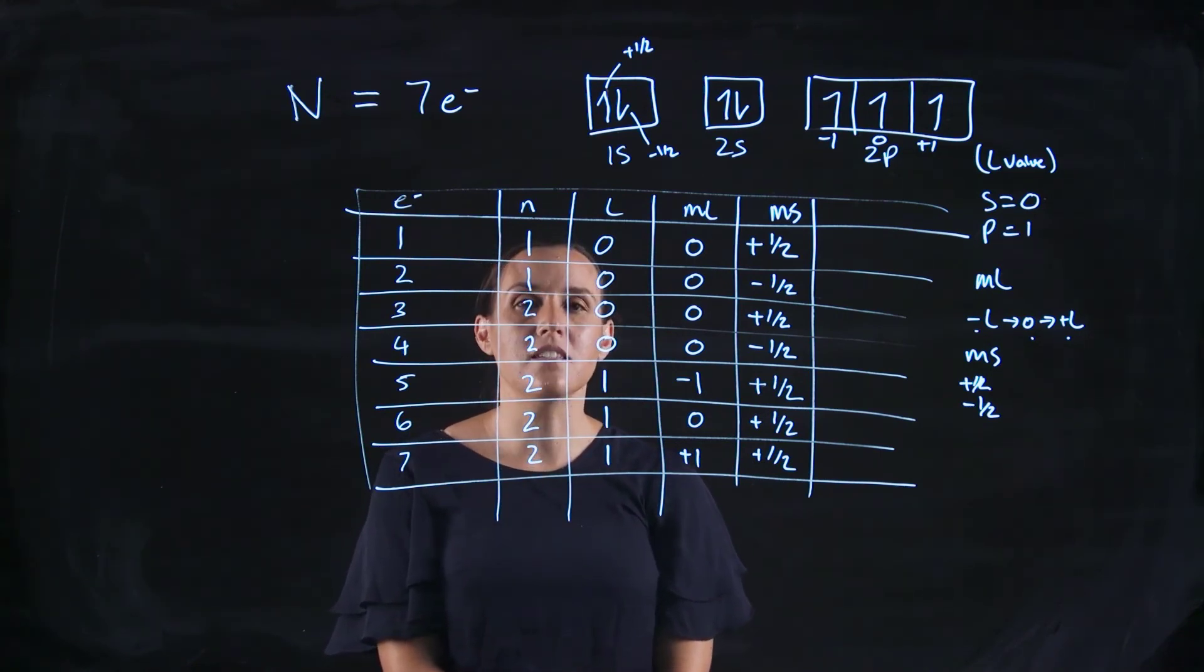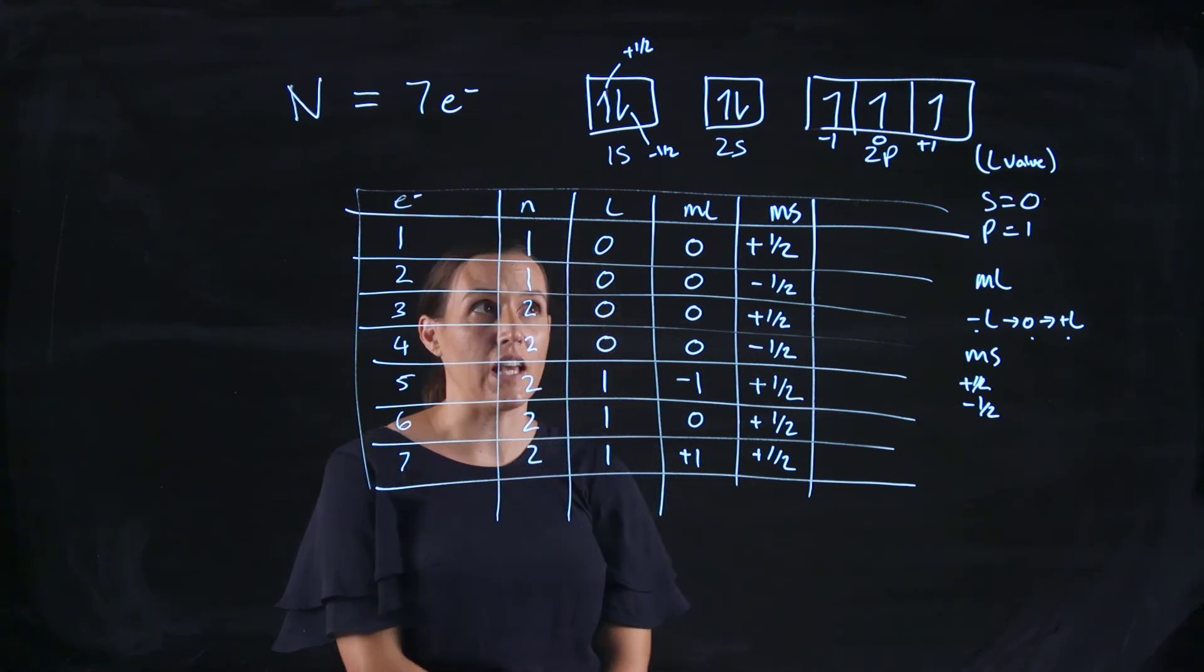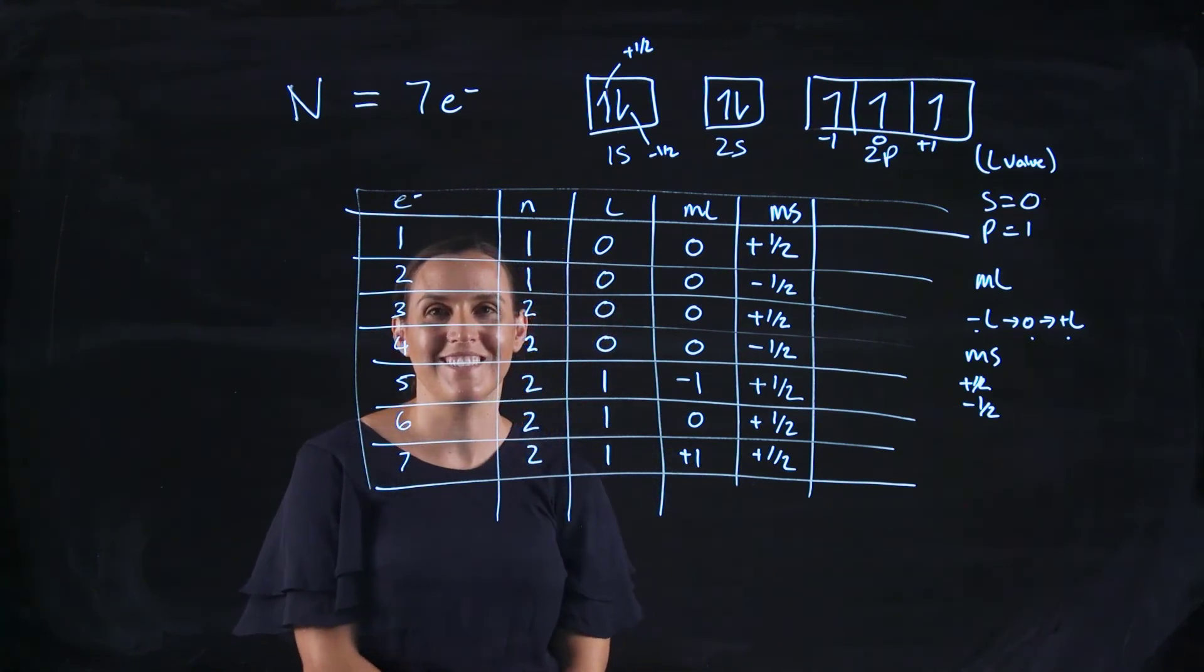Okay, so that's how we would assign nitrogen's quantum numbers for each of the electrons that are within nitrogen. Thank you.